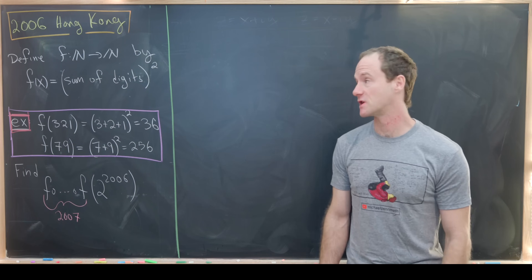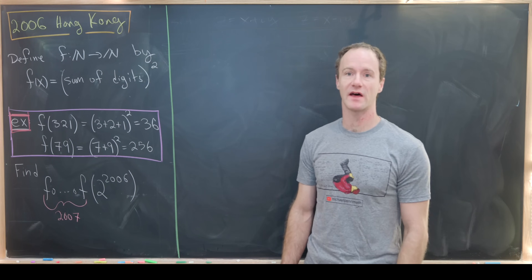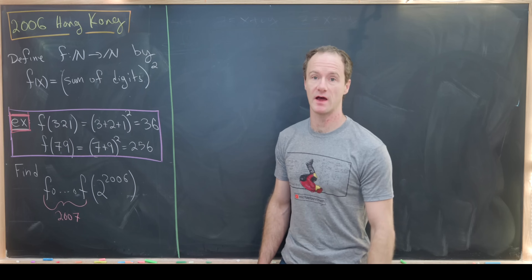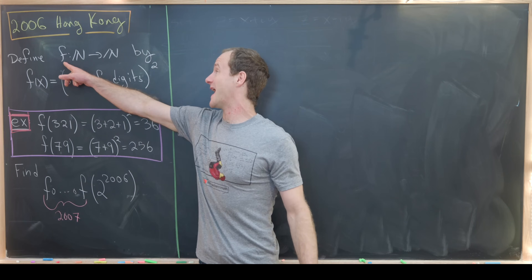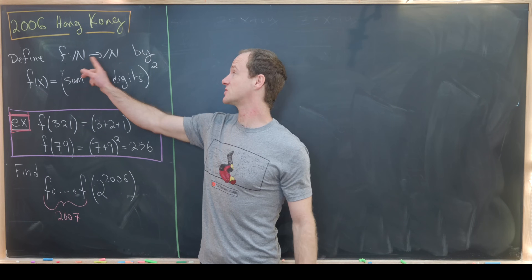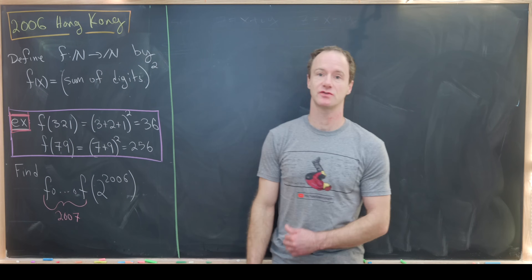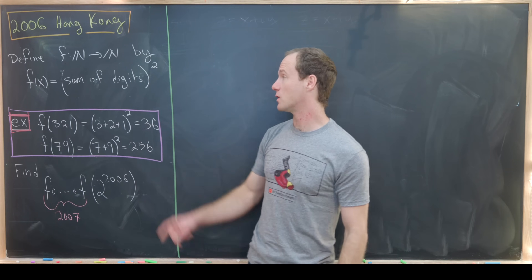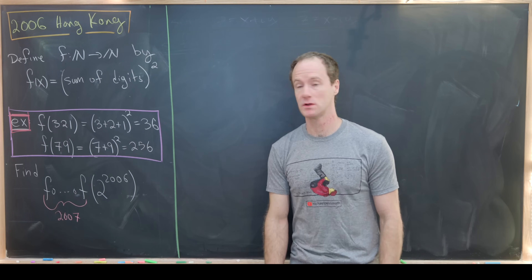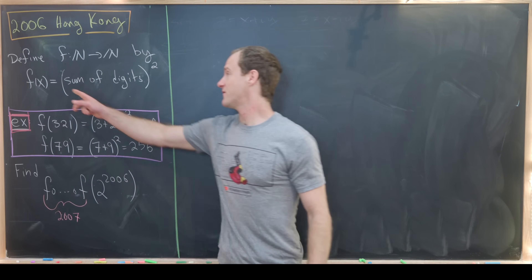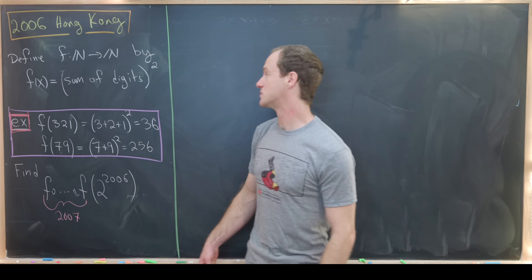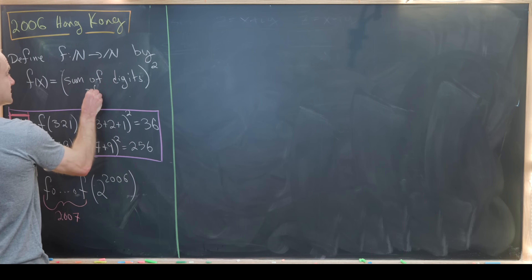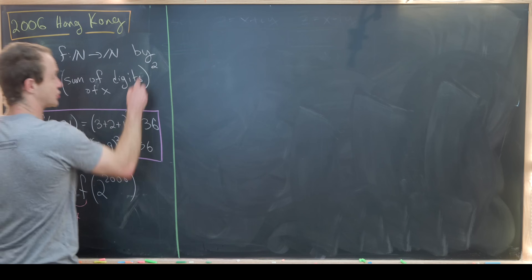Here I've got a nice problem that was on a Hong Kong math contest. We want to define a function f from natural numbers to natural numbers, defined by the following rule: f of x is equal to the sum of the digits of x, squared.